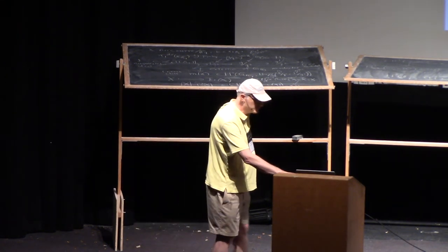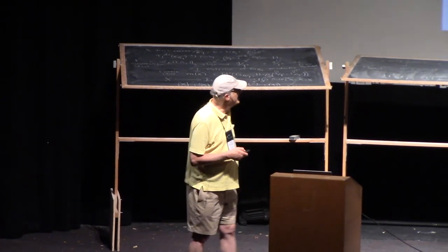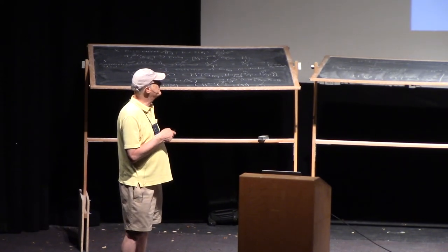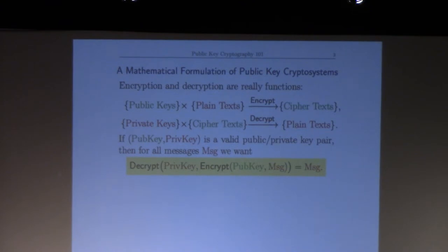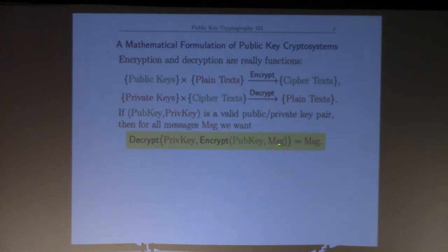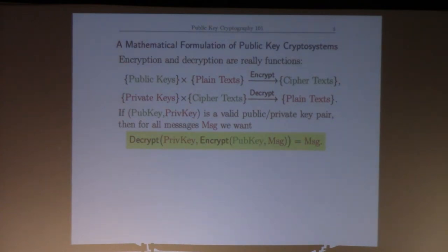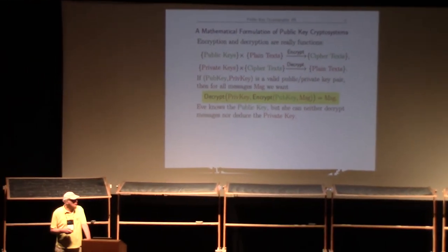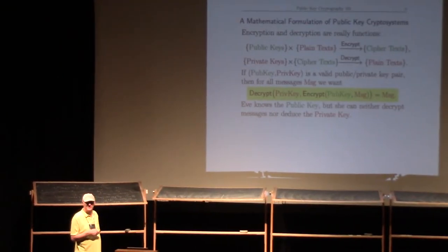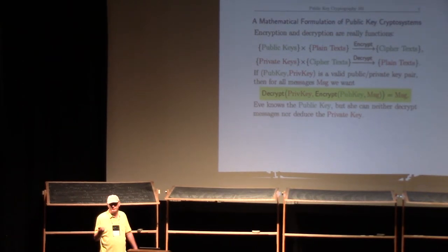The idea is: if you take a public key and its associated private key — a valid public-private key pair — then for any plaintext message, if you encrypt it using the public key and then decrypt using the private key, you get the message back. But if you try to decrypt with any other private key not associated to this public key, you should get garbage out. Since Eve knows the public key, that's great, but it doesn't let her decrypt messages, nor hopefully does it let her figure out which private key goes with Alice's public key. So the set of private keys needs to be big enough that you can't do a brute force search.